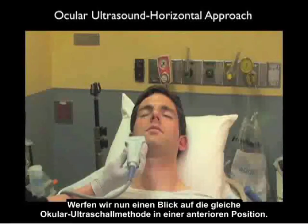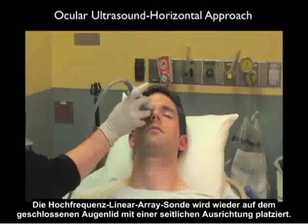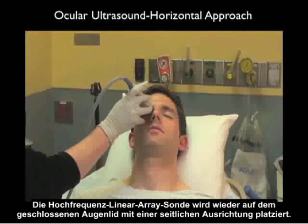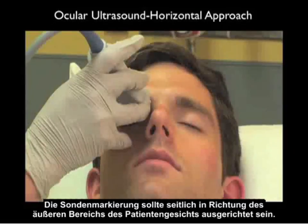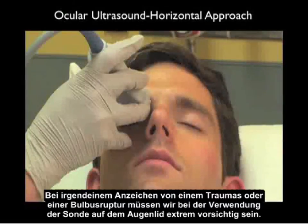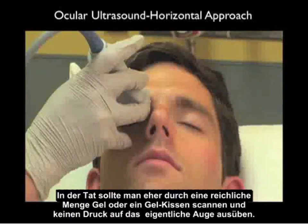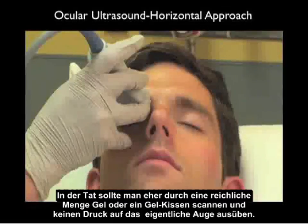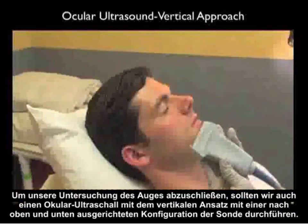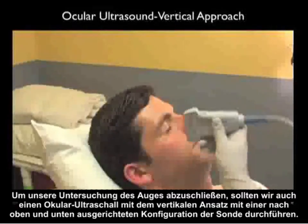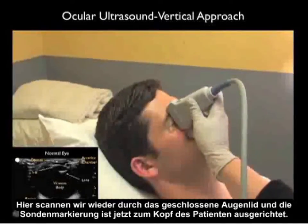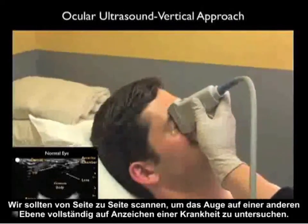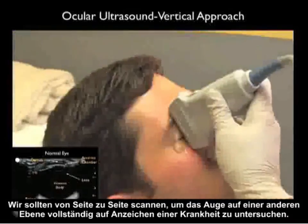Now let's look at that same ocular ultrasound approach from a more anterior position. Note again that we're placing the high-frequency linear array probe over the closed eyelid in a side-to-side orientation, with the probe marker oriented laterally towards the outer part of the patient's face. Remember that if there's any question of trauma or globe rupture, we must be extremely careful — scanning through a copious amount of gel known as a gel pillow and not applying any pressure to the actual eye. To complete the examination, we should also perform ocular ultrasound from the vertical approach, scanning side to side to fully investigate the eye in a second plane for any signs of pathology.